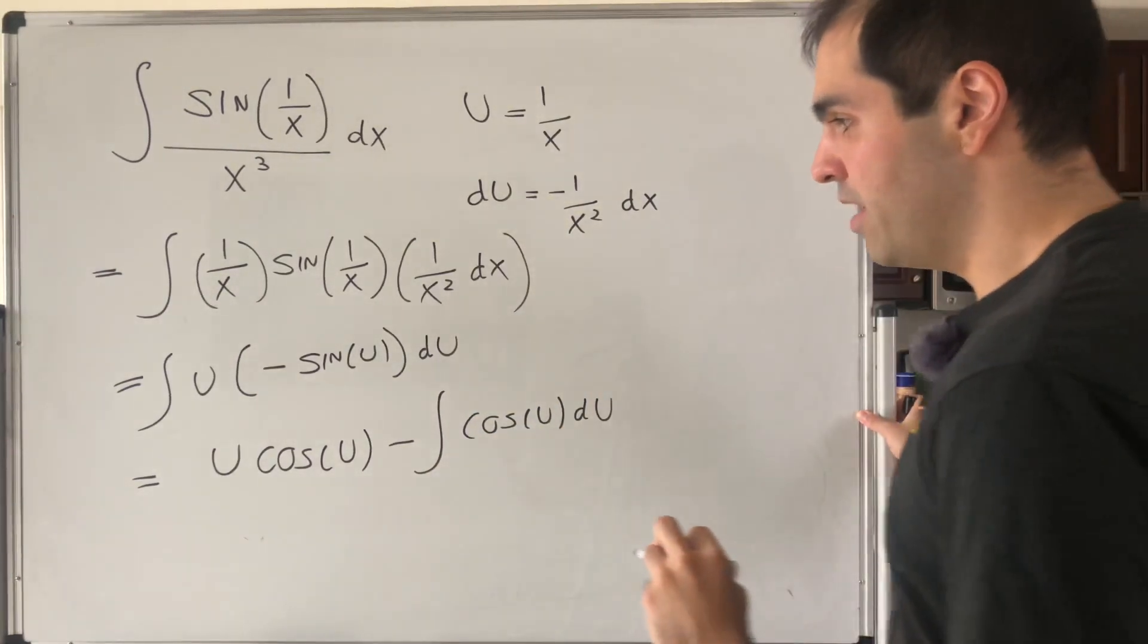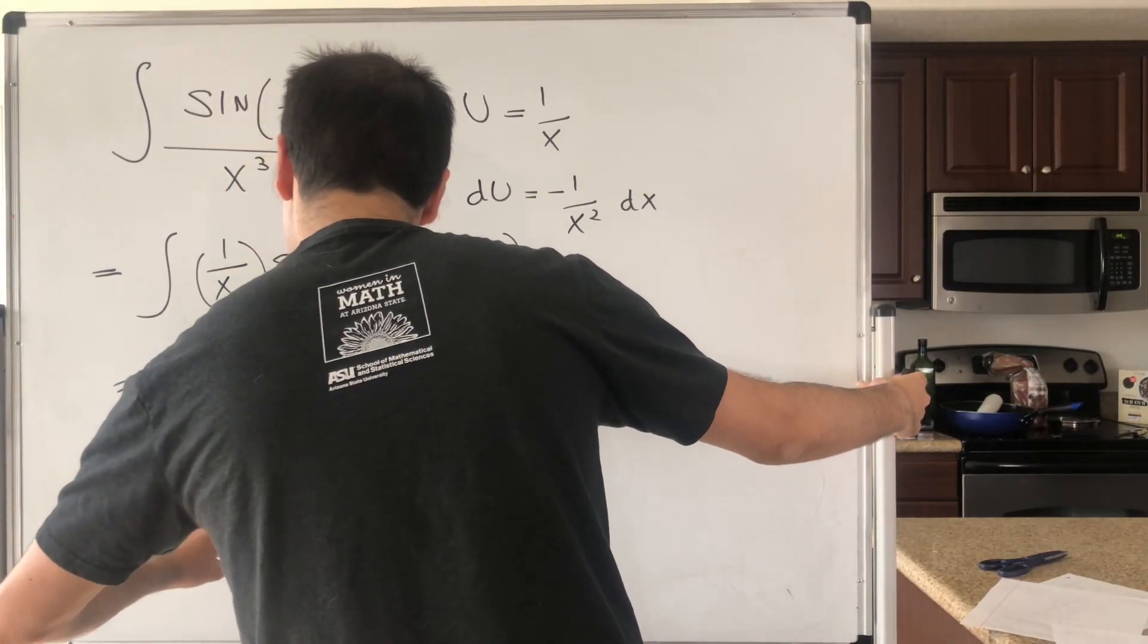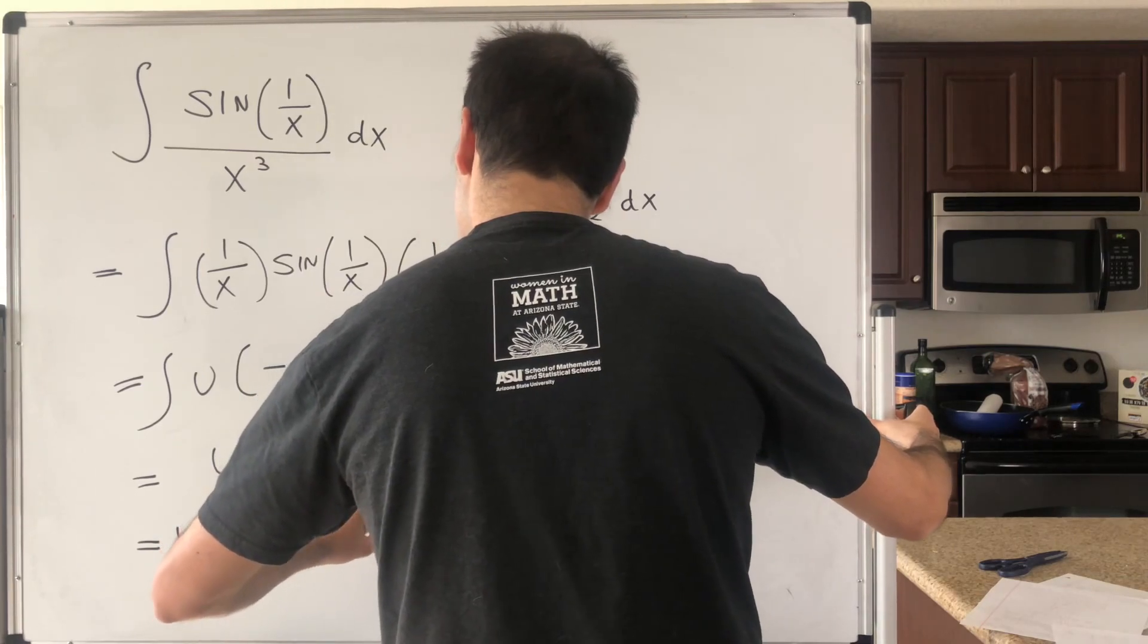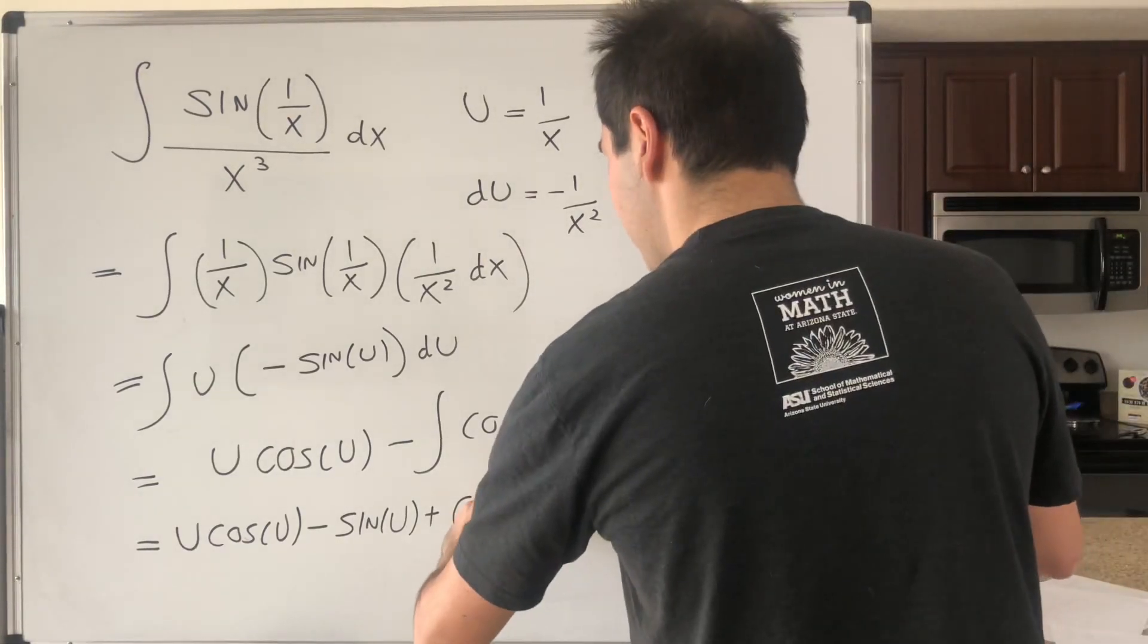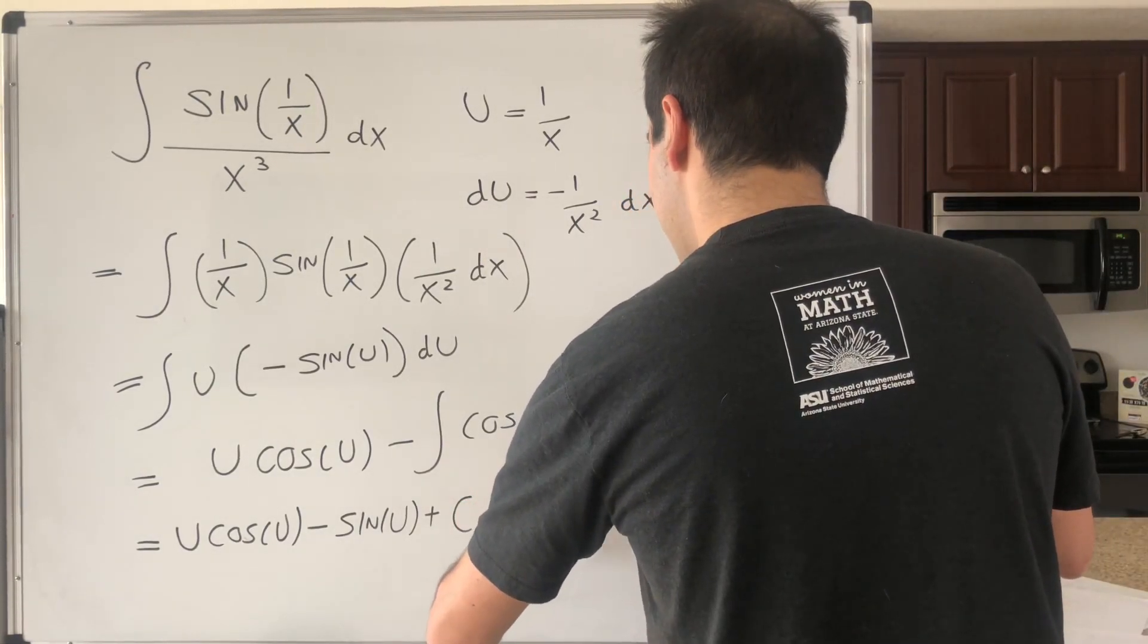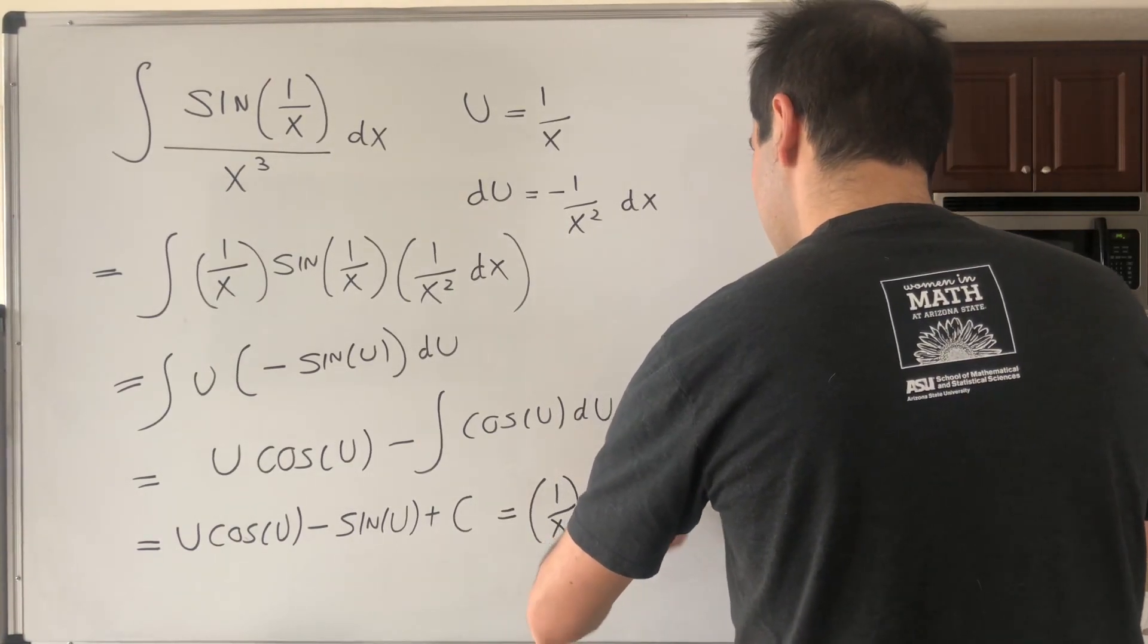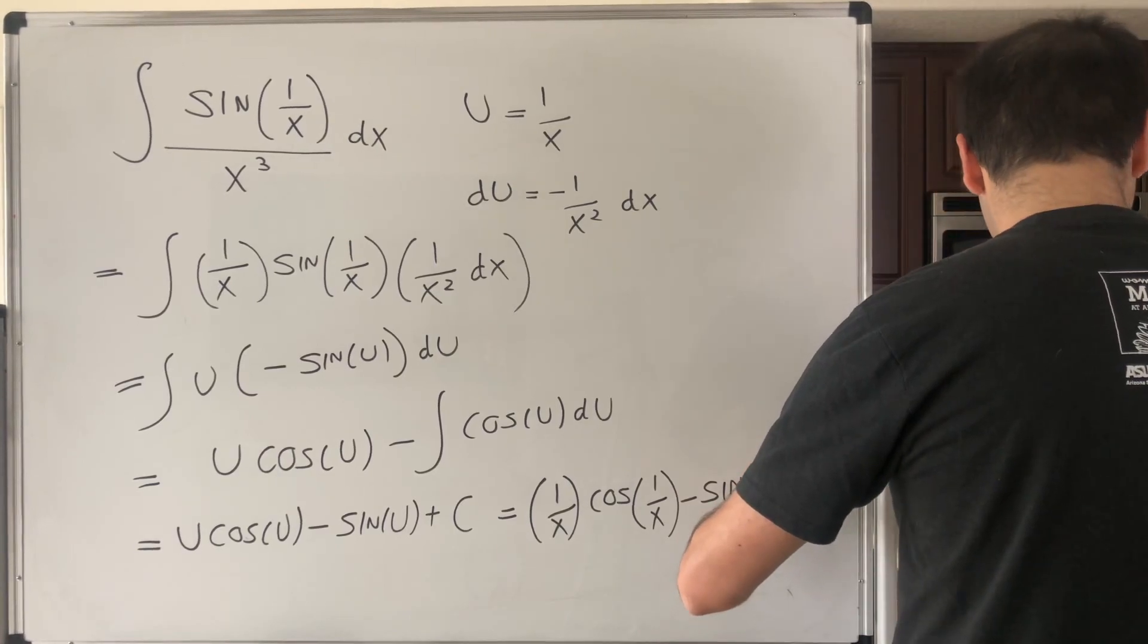which ultimately becomes u cosine of u minus sine of u plus a constant. And then in terms of our x's, this becomes 1 over x cosine of 1 over x minus sine of 1 over x plus a constant.